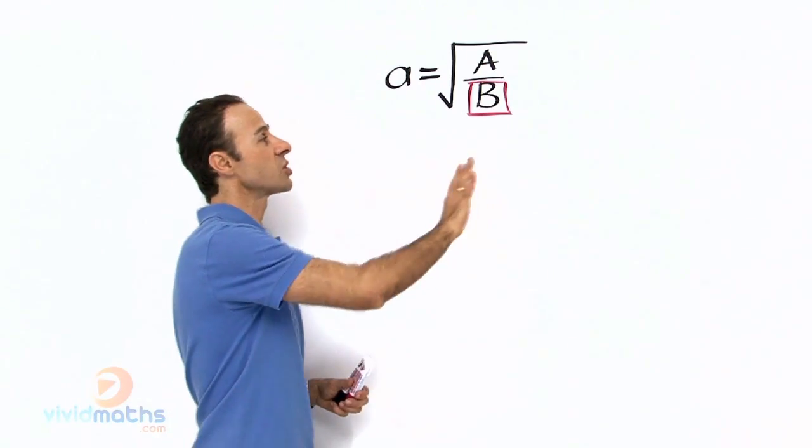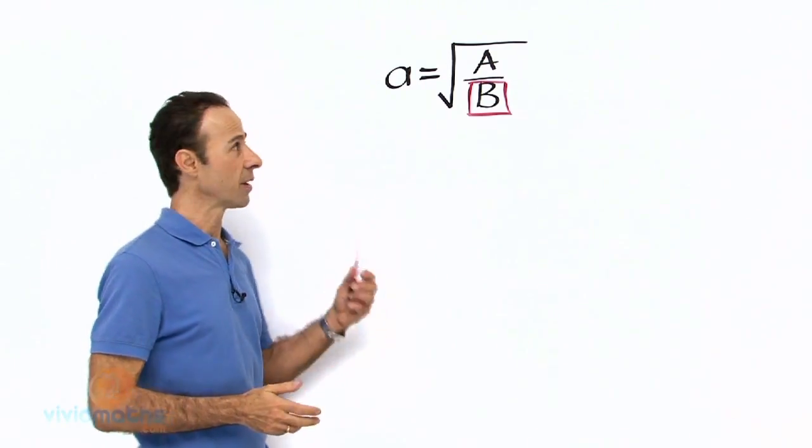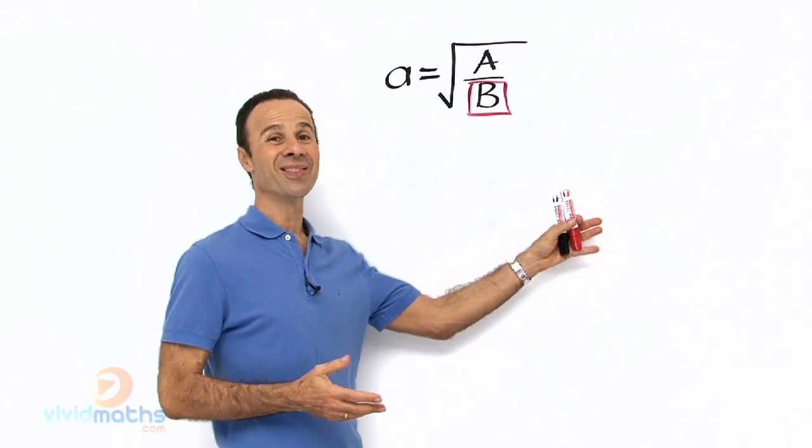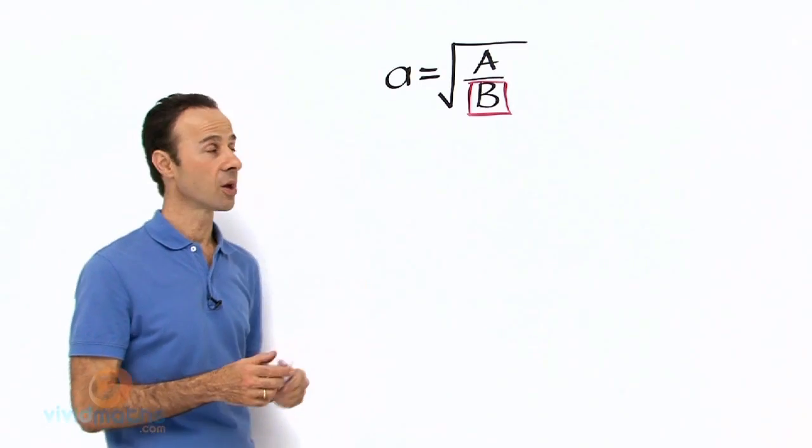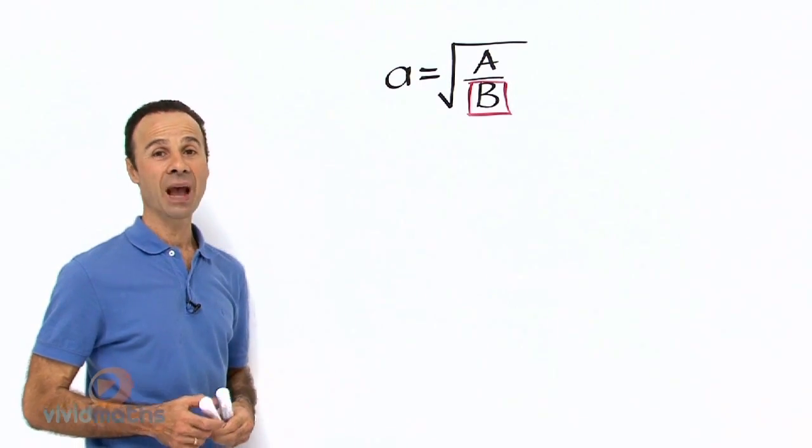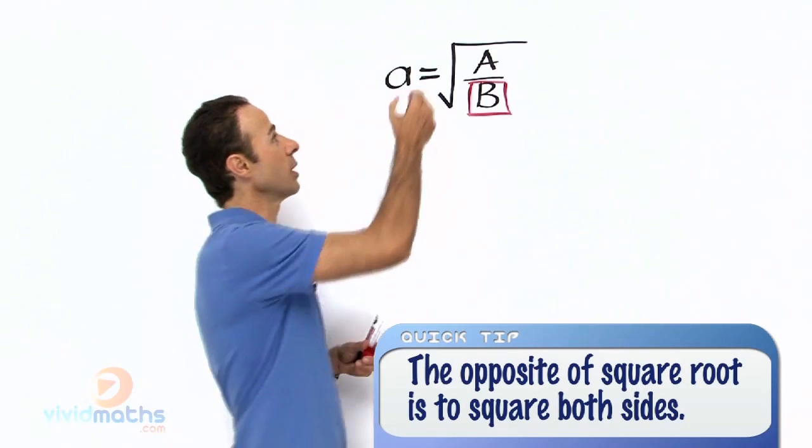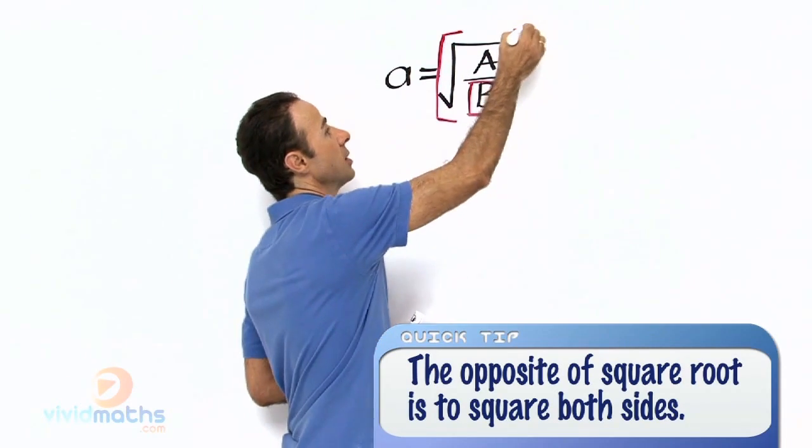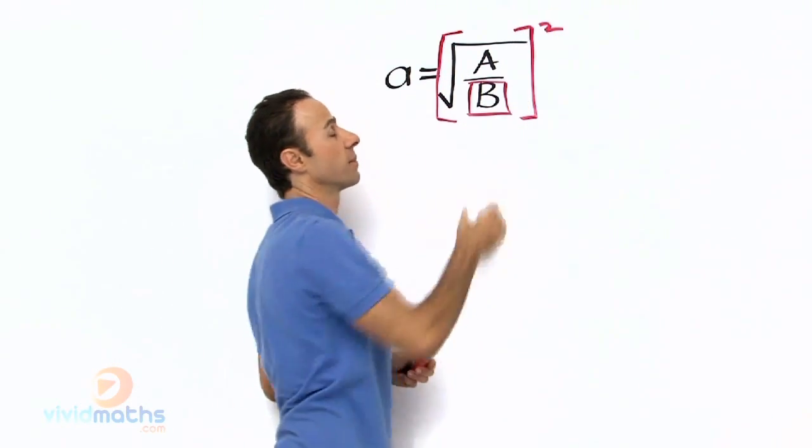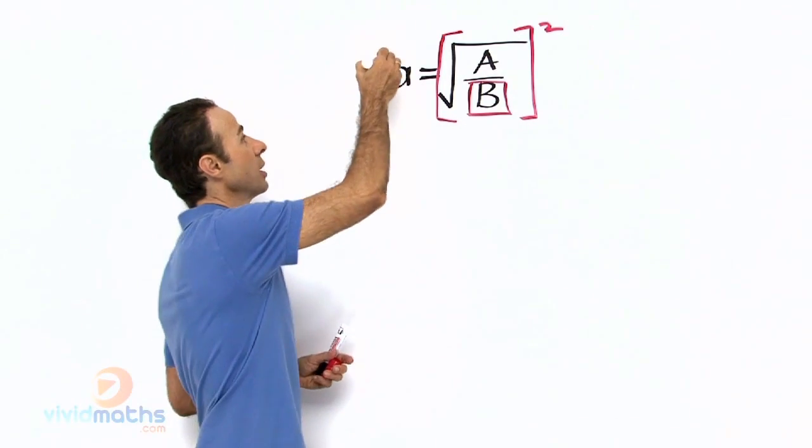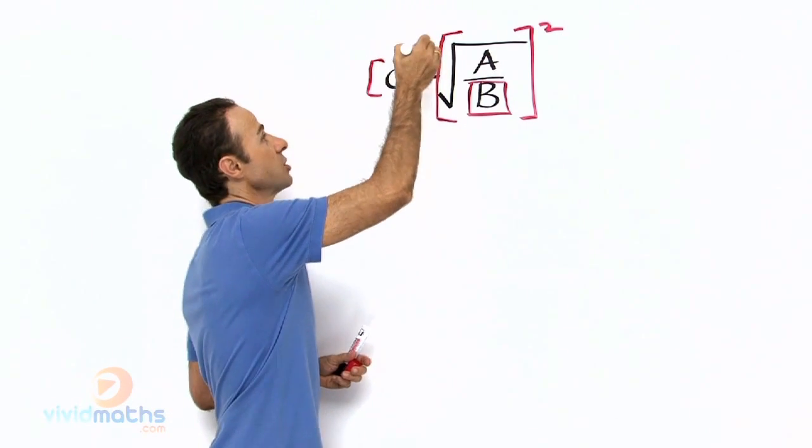Since the right hand side is square rooted and the left is not, let us remember with equations to do what we do on one side the same thing to the other side. So to get rid of the square root what do we do? We need to square it. So let us square brackets here, let us square this side. Now when you square this side you also have to square that side.